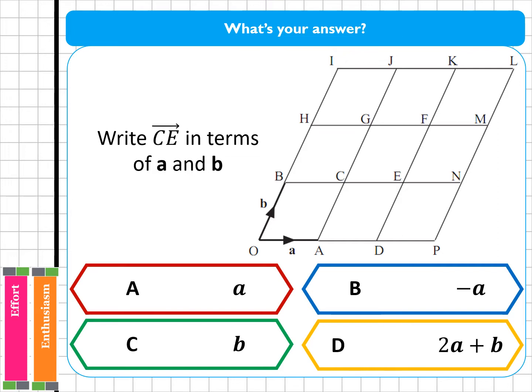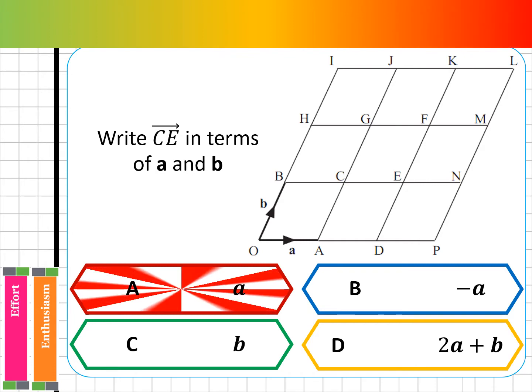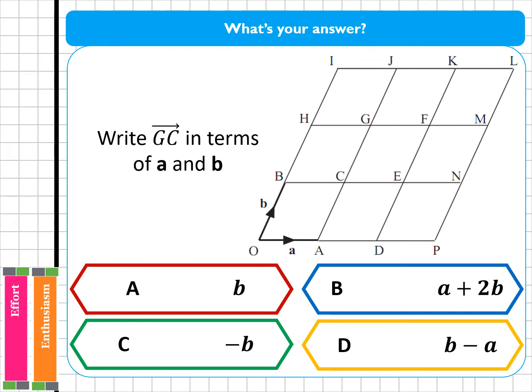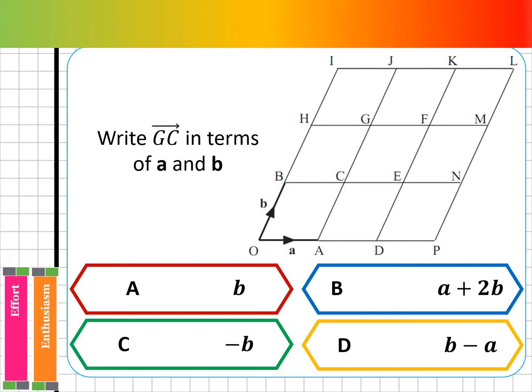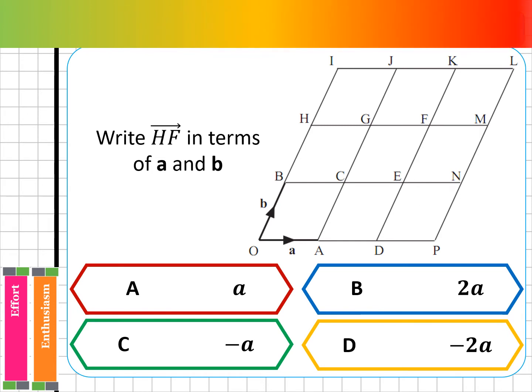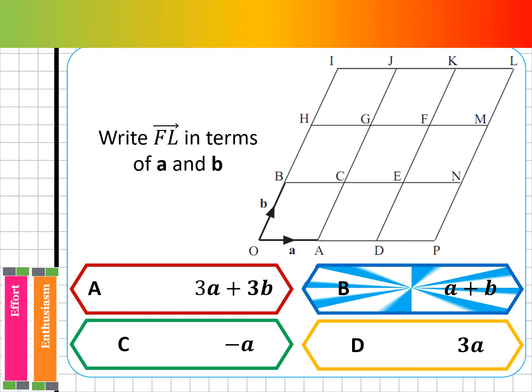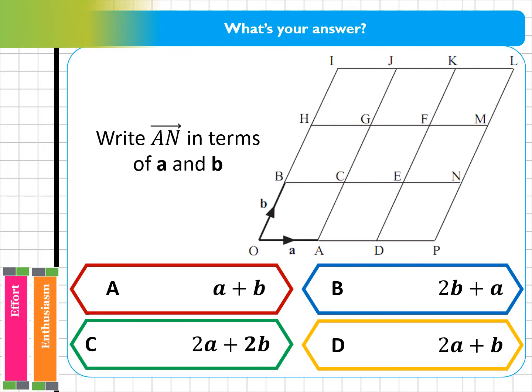Write CE in terms of A and B. Write GC in terms of A and B. Write HF in terms of A and B. Write FL in terms of A and B. Write AN in terms of A and B.